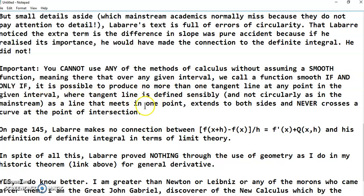This means that you have to take the sensible definition of tangent line, which was the original one by the ancient Greeks, meaning that it's not circular as it is in the mainstream, where you already use the derivative as a slope. A tangent line is a line that meets in one point, extends to both sides, and never crosses a curve at the point of intersection. This is seen as a problem in my new calculus because you cannot have a derivative at a point of inflection.